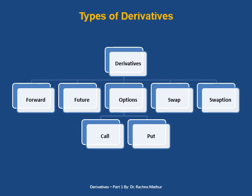A forward contract is a non-standardized contract between two parties where there is no clearing house. A future contract is the standardized contract where trades are done on exchanges and there is a provision for the clearing house. Options are the type of derivatives where you have a right but not an obligation to buy and sell the underlying asset. Options are of two types: call option and put option. Then we have a swap, and lastly we have a swaption, which is the combination of swap plus option.